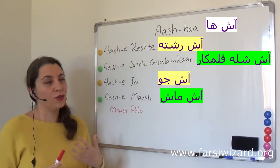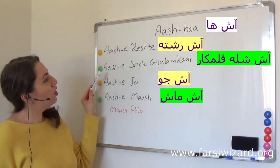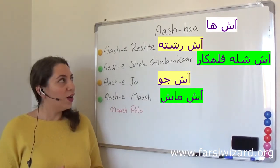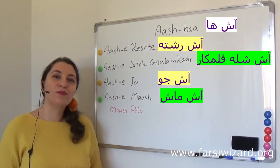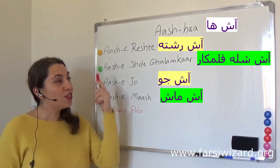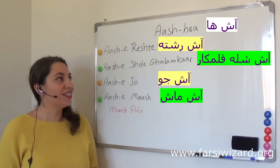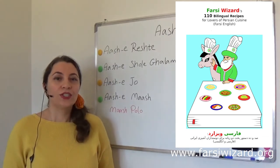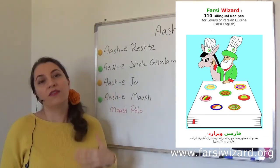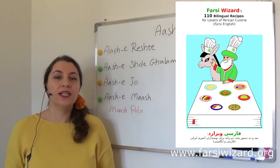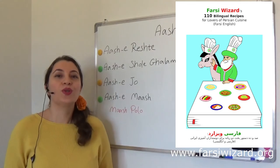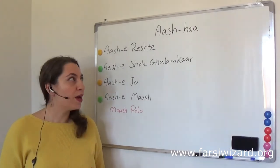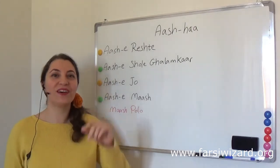Let's review quickly: Ash-e-Reshteh, Ash-e-Sholeh Qalamkar, Ash-e-Jo, and Ash-e-Mash. I hope you learned some new interesting information today. If you're interested in making any of these yummy Ashes, you can check out my book 110 Bilingual Recipes — there are recipes with explanations of ingredients and method of preparation, in both Farsi and English, so you can practice your Farsi as you learn to cook Iranian dishes. Okay, until next class, khuda fizz.